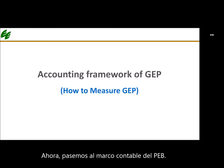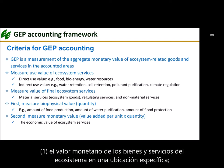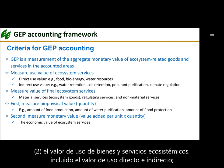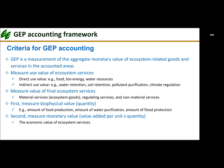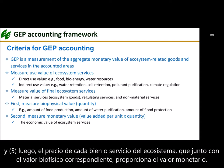Now let us move to GEP's accounting framework. GEP accounting guidelines mainly take into consideration the following five aspects: 1. Accounting for the monetary value of ecosystem goods and services in a specific location. 2. Accounting for the use of ecosystem goods and services, including direct and indirect use value. 3. Accounting for final ecosystem goods and services, including material goods, regulating services, and non-material services. 4. Accounting first for the functional quantity — that is, their biophysical value — and then determining the price of each ecosystem good or service, which together with the corresponding biophysical value provides the monetary value.